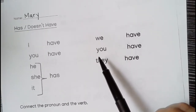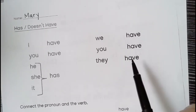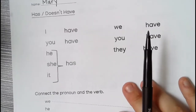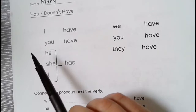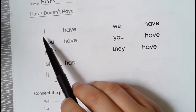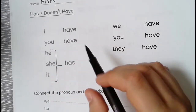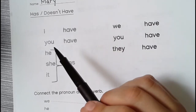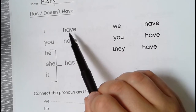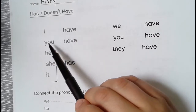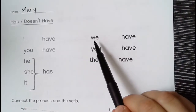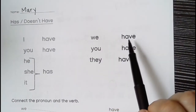And then we have, you have, and they have. Another example — pencil. I have a pencil. You have a pencil. We have pencils.